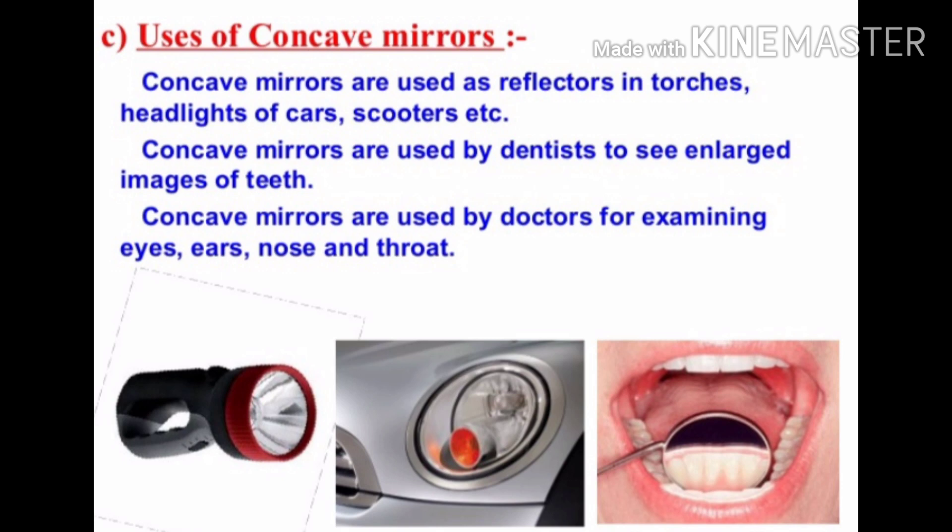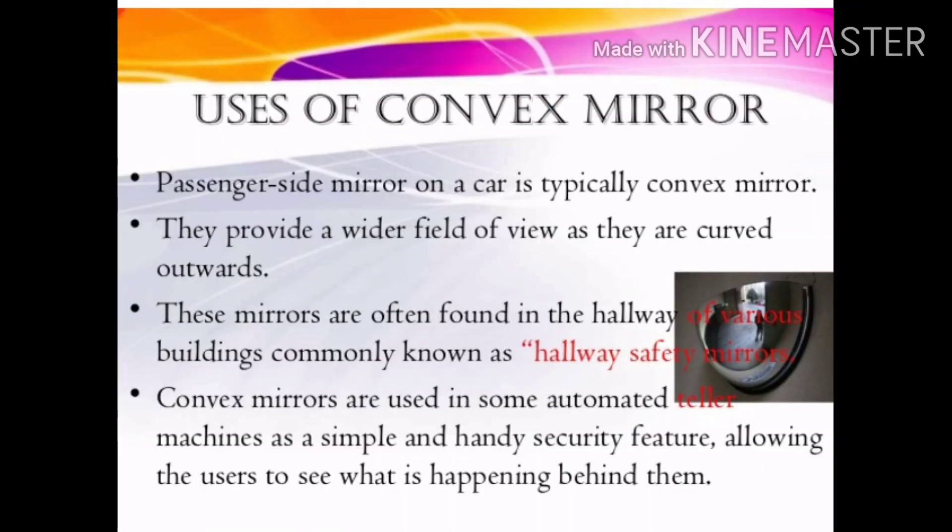Concave mirrors are commonly used in torches, searchlights and vehicle headlights to get powerful parallel beams of light. They are often used as shaving mirrors to see a larger image of the face. Dentists use concave mirrors to see large images of the teeth of patients. Large concave mirrors are used to concentrate sunlight to produce heat in solar furnaces. Convex mirrors are commonly used as rear-view mirrors in vehicles, enabling the driver to see traffic behind him. Convex mirrors are preferred because they always give an erect though diminished image and have a wider field of view, enabling the driver to view a much larger area than would be possible with a plane mirror.